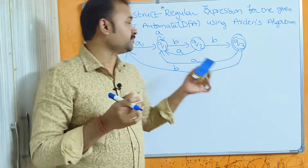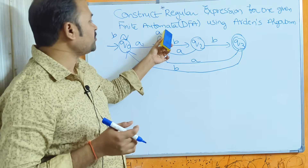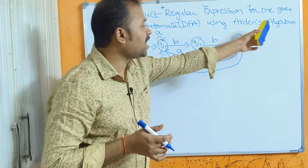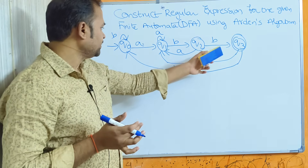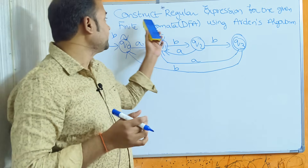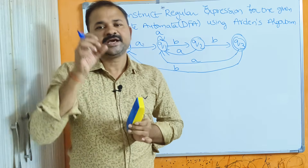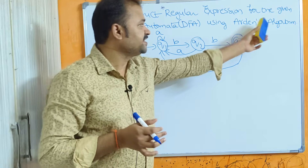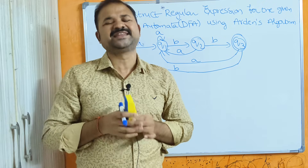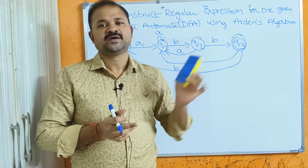Now let us see this example: construct a regular expression for the given finite automata. Here a DFA is given, and we have to construct the equivalent regular expression using Arden's algorithm. We need to follow three steps.